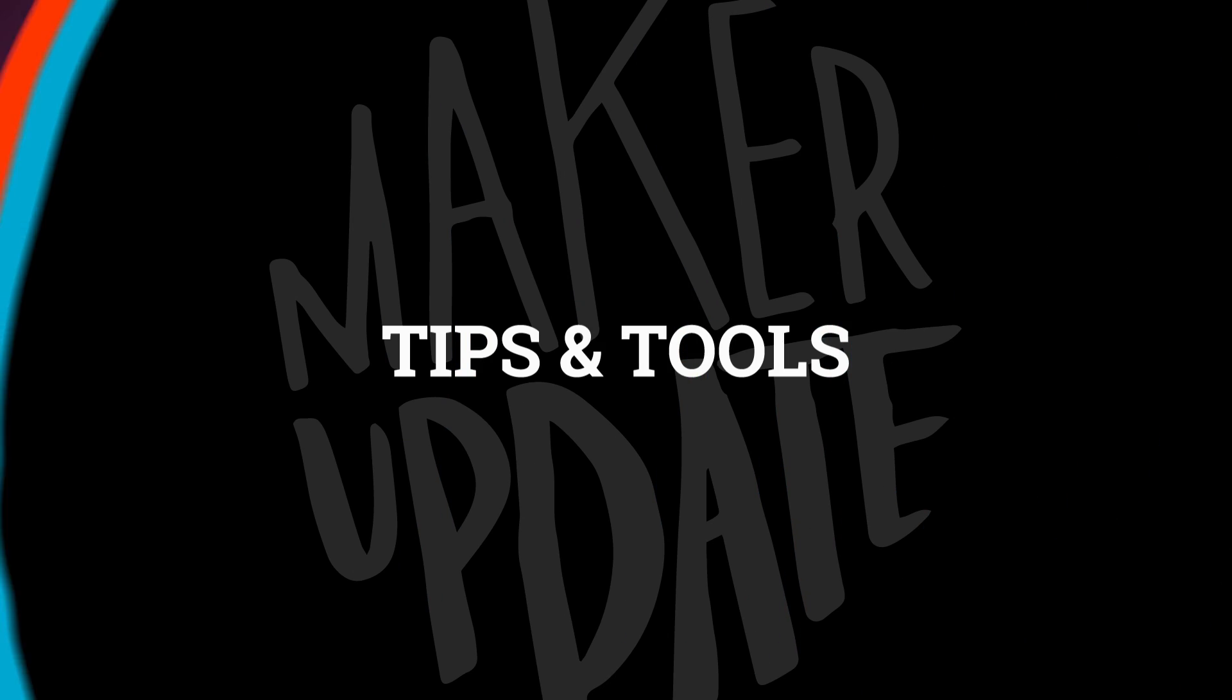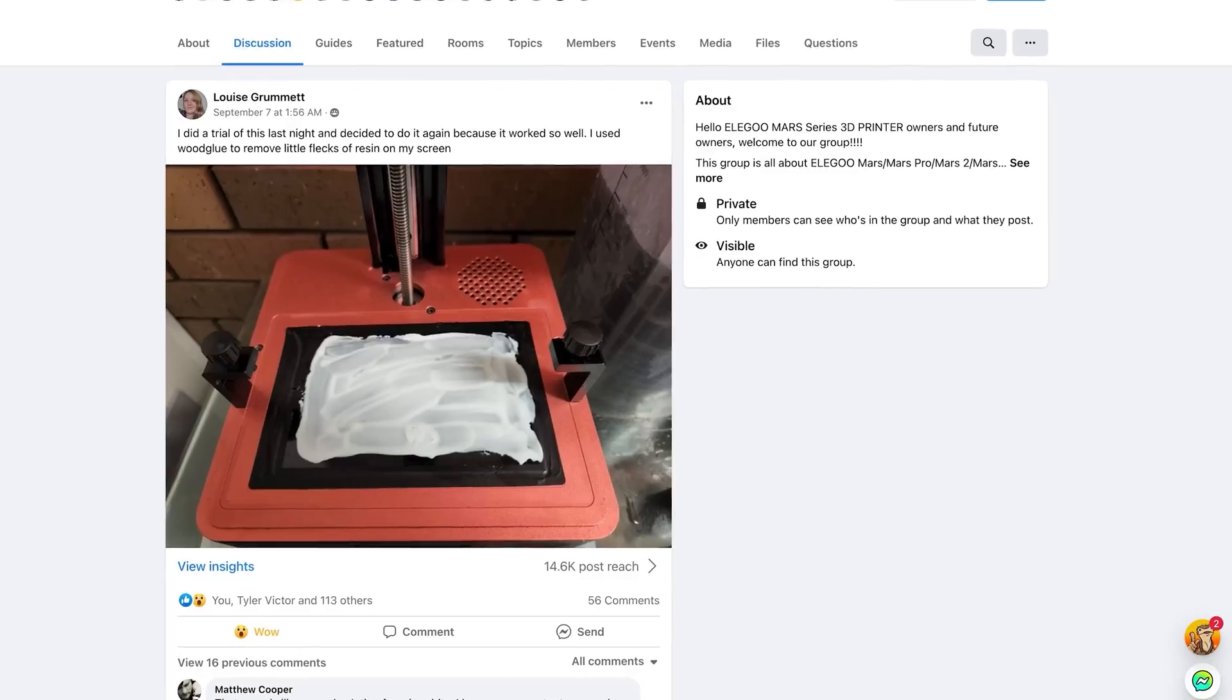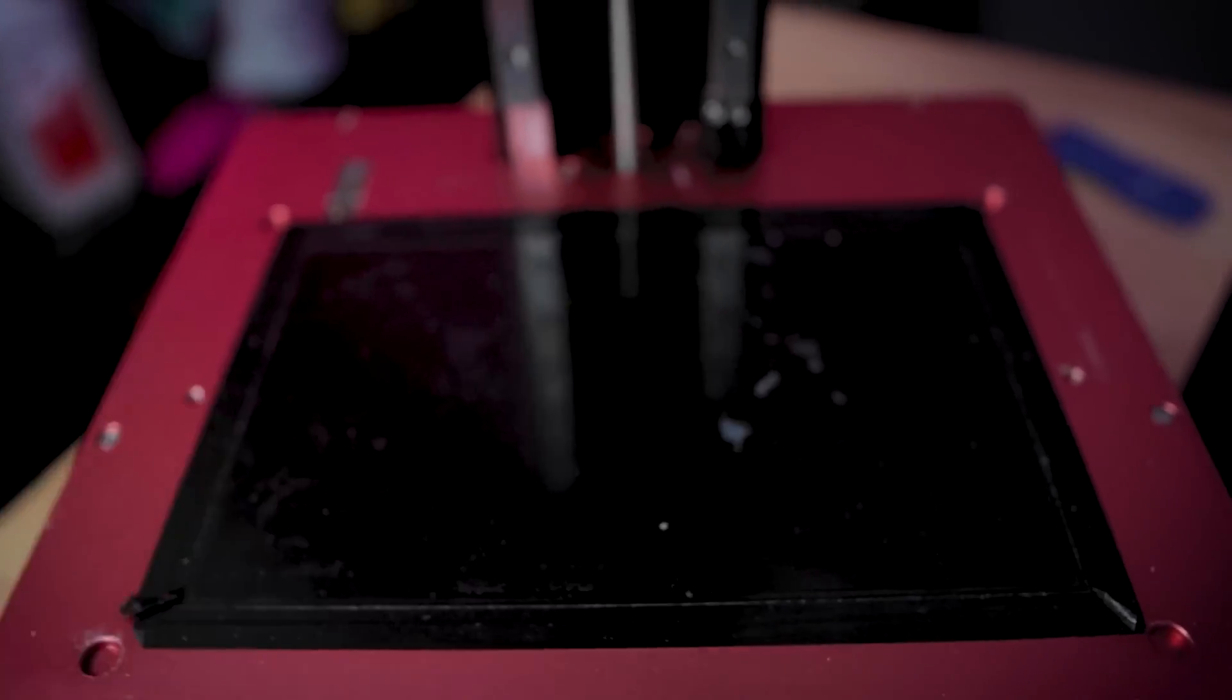Time for some tips and tools. On YouTube, Uncle Jesse has a tip for using wood glue for cleaning spilled resin off of your SLA printer screen.